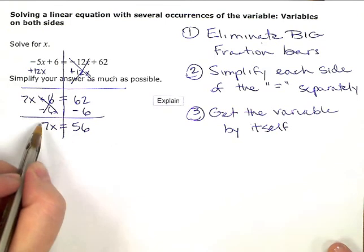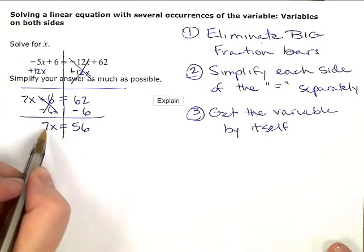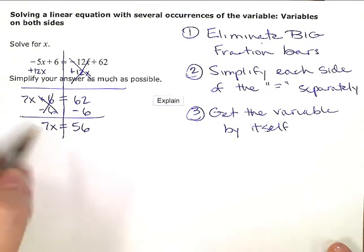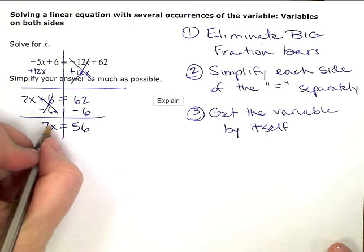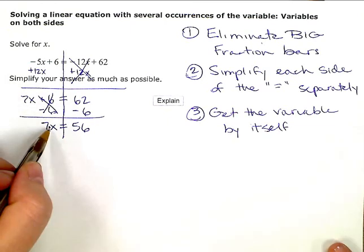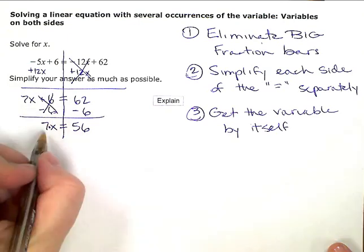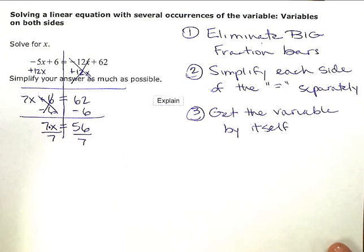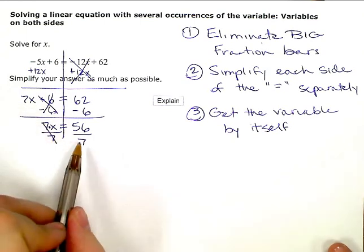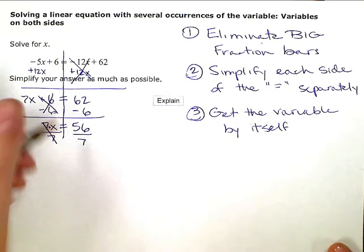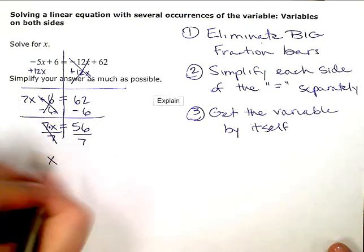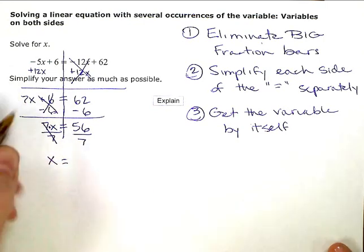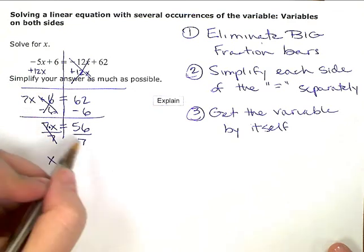Lastly, now I can deal with the number that's attached directly to the x. And this is implied multiplication, there's kind of a hidden multiplication there. It's 7 times x, so the inverse is to divide by 7, divide by 7, keeping my equation balanced by doing the same thing on the other side. And that leaves me with just x on the left equals, and 56 divided by 7 is 8.